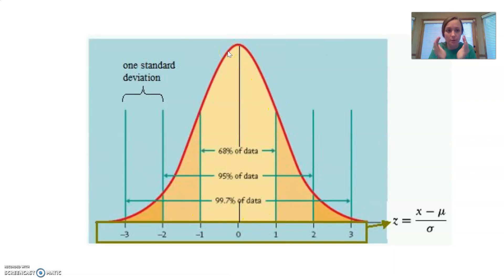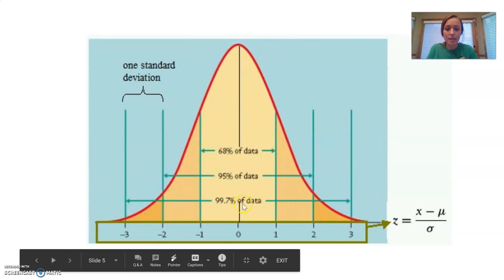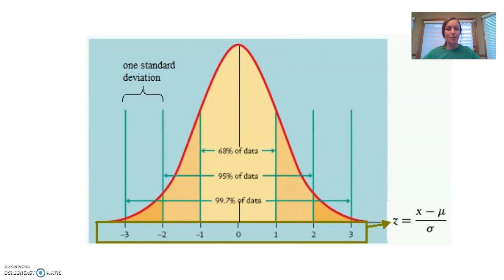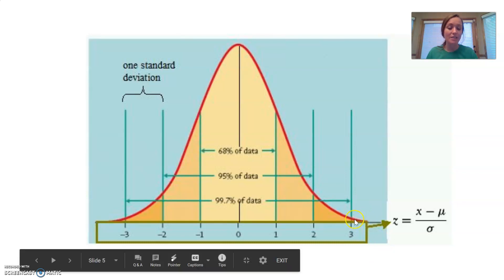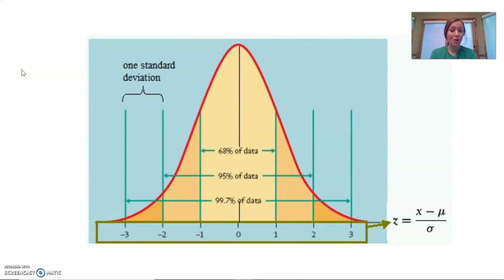If we go outward all the way to three standard deviations below and three above, you encompass almost all of your data points. But there is a tiny tiny percentage of people out in the extremes — not many scores fall three standard deviations above the mean. Standard deviation helps us understand how spread our data is.